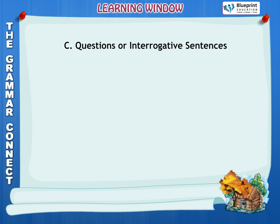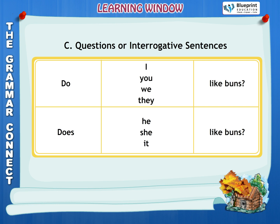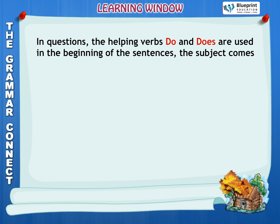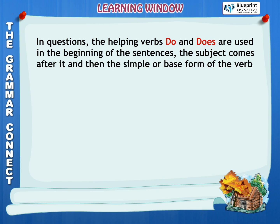C. Questions or Interrogative Sentences. Do I, You, We, They like Buns? Does He, She, It like Buns? In questions, the helping verbs DO and DOES are used at the beginning of the sentences. The subject comes after it, and then the simple or base form of the verb is used. S or ES is never used.